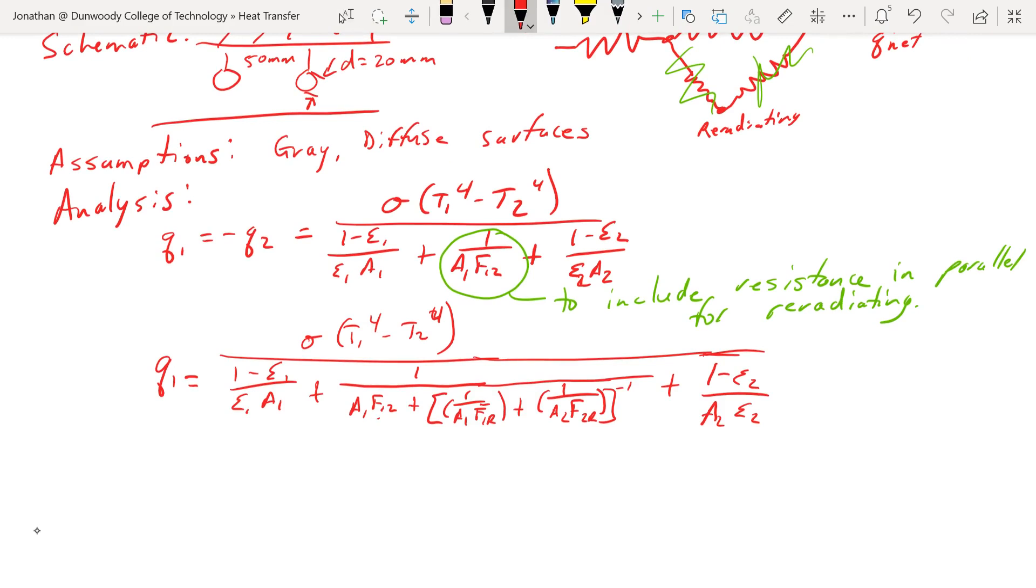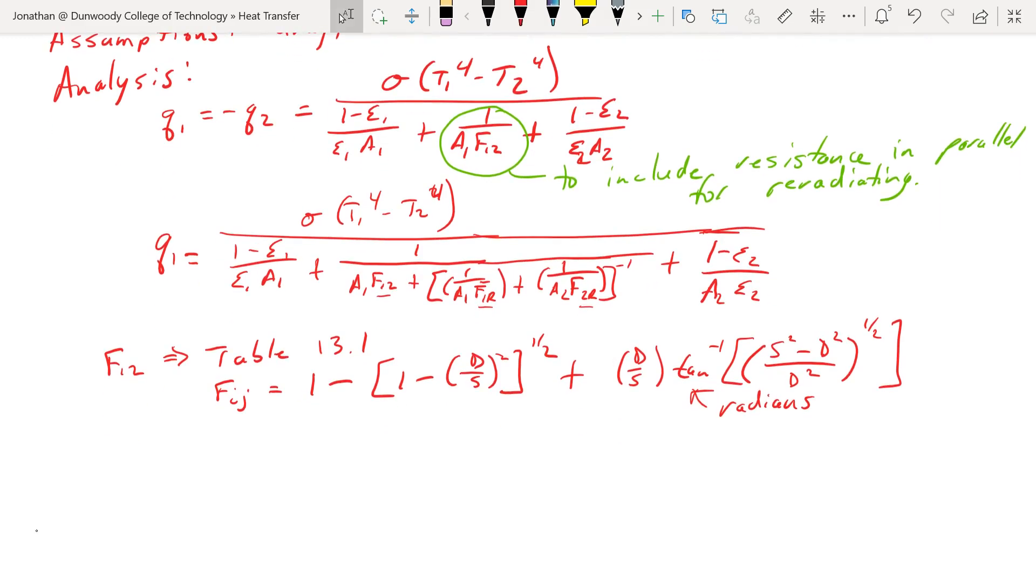So what do we need? We need some of these view factors. F12, we're going to go back from table 13.1. We find that FIJ from table 13.1 is 1 minus quantity 1 minus D over S squared to the 1 half, plus S squared minus D over S, tan to the negative 1 of S squared minus D squared over D squared, square root to the 1 half. The important thing to note here is this needs to be in radians. We'll get the wrong value otherwise.